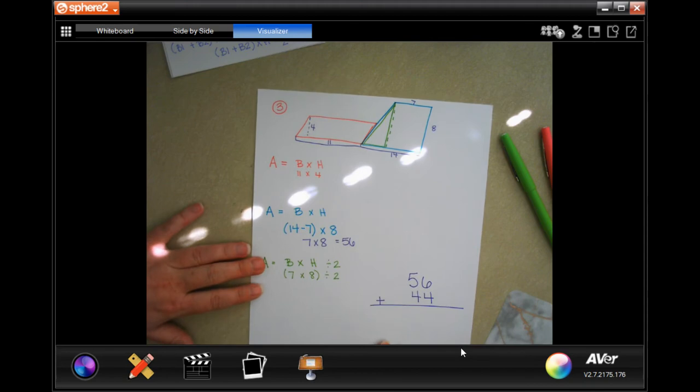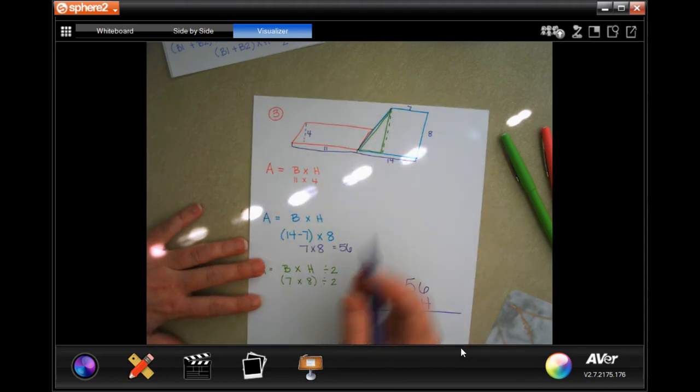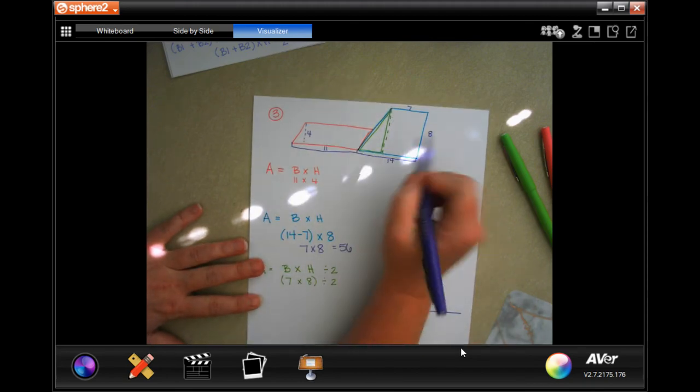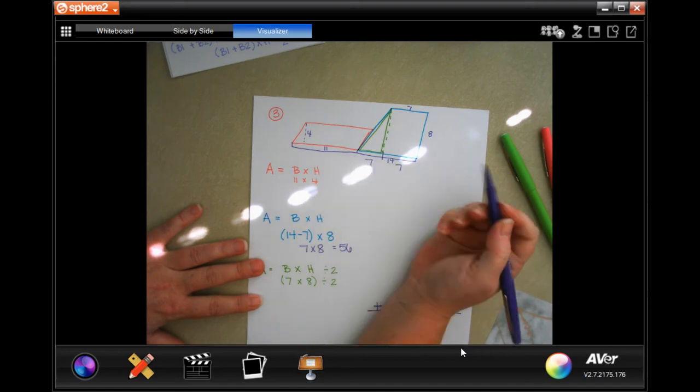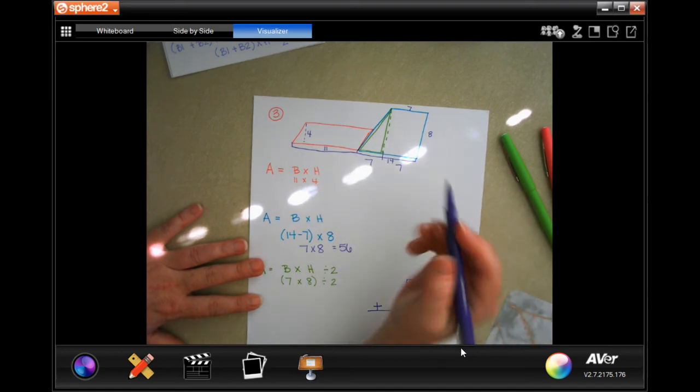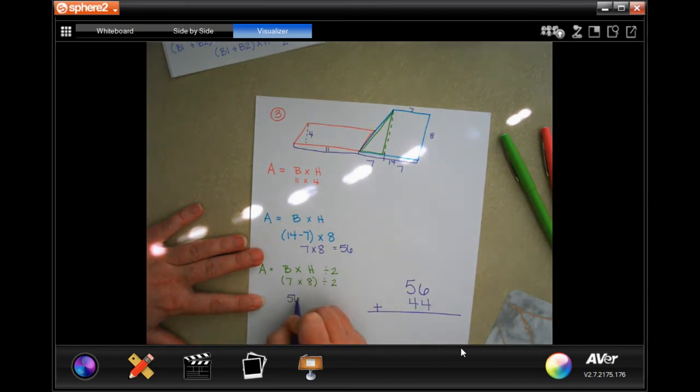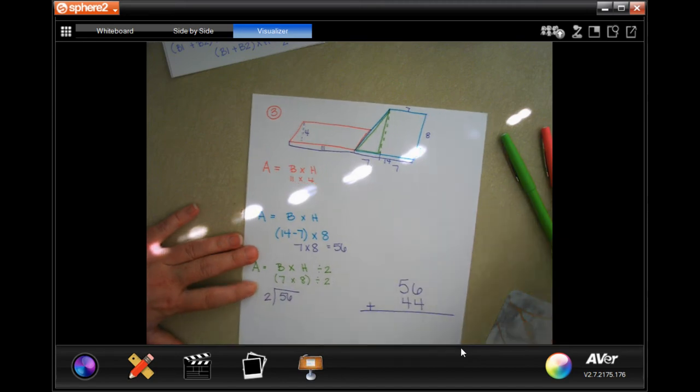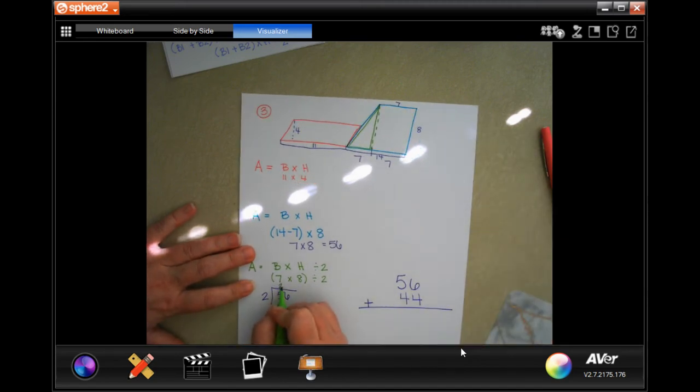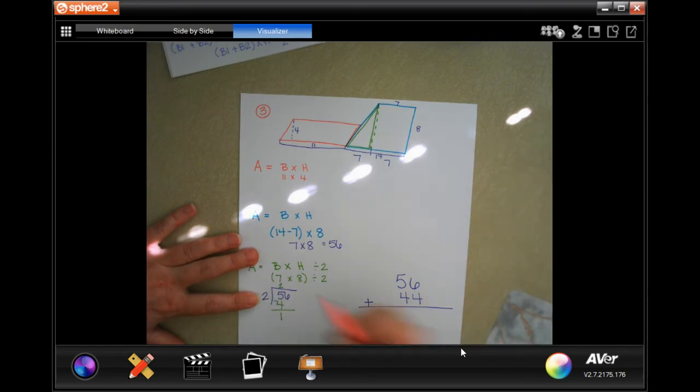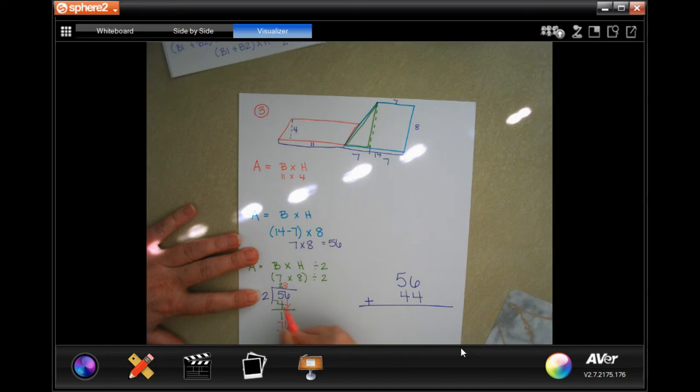Now I just have to do that last triangle. That leaves me with 7 because this is 7 and this is 7, I know it's not to scale. And then I know that it's 8 tall, so it's 56 and I have to divide that by 2. Two goes into 5 two times, 2 times 2 is 4, subtract and get 1. 1 is smaller than 2, so I'm going to bring down my 6. Two goes into 16 eight times.